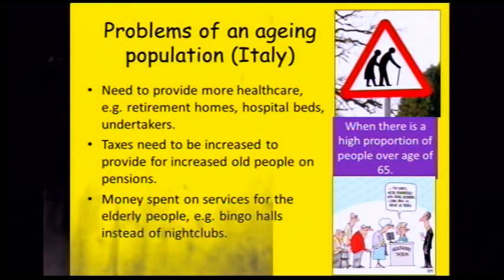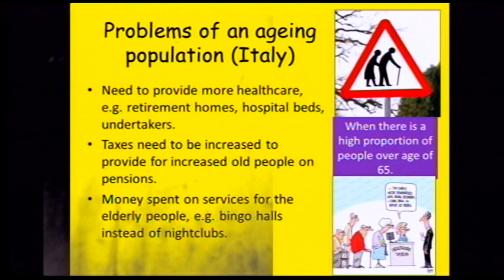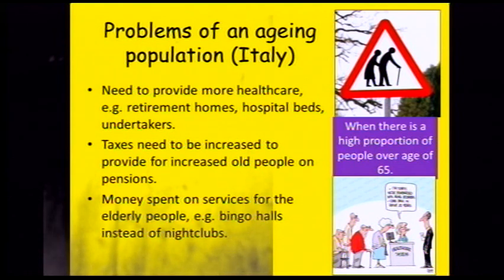There are some problems with an ageing population — the example here is Italy. Italy has a large ageing population and the government has to provide lots more healthcare for the elderly through retirement homes, hospital beds and undertakers, which means they're often not spending money on services for children. Taxes also need to be increased for working-age people so the government has enough money to pay pensions. Money is spent on services for the elderly like bingo halls instead of for young people like nightclubs.